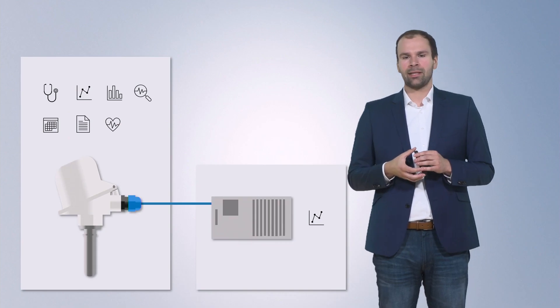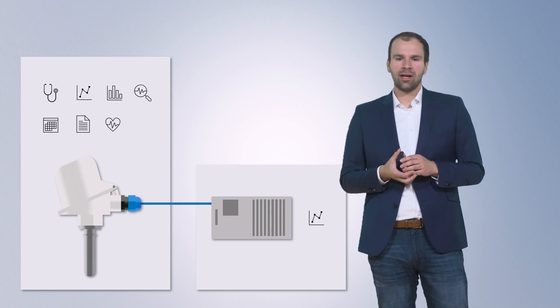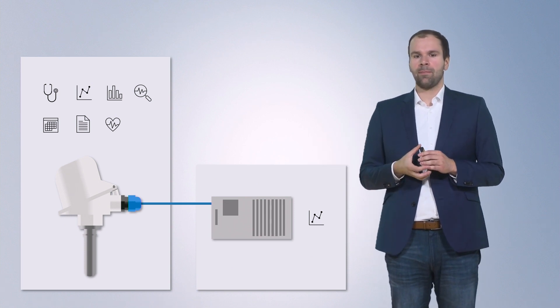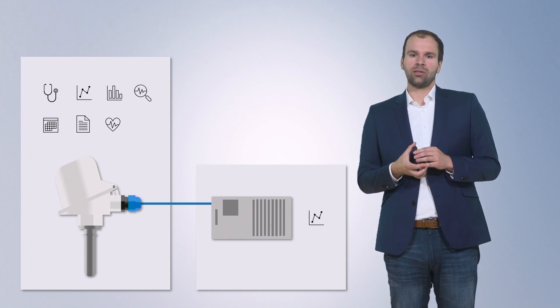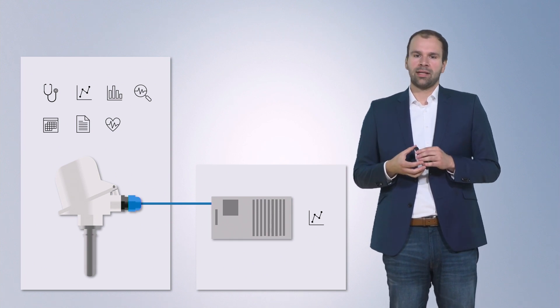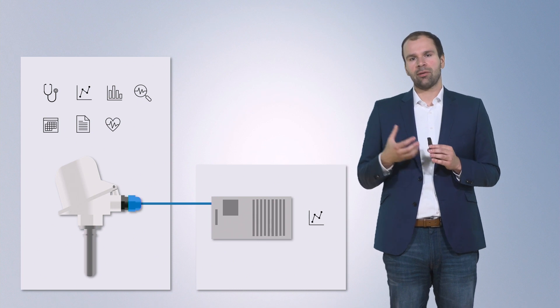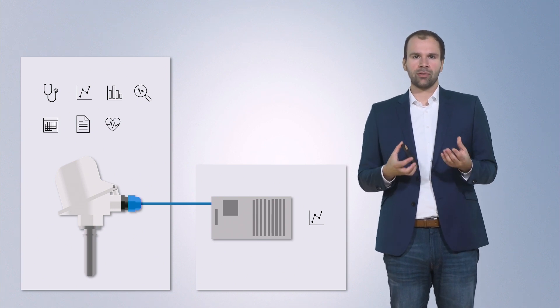Let's take a look at an example. Here we have a smart field device, which is a temperature sensor that provides additional information. Typically, the existing automation infrastructure only reads the process value — so in this case the temperature from the device. But for the NOA concept, an additional edge device will read all the information provided on top of that, such as an operating hours counter or further information on the condition of the device.